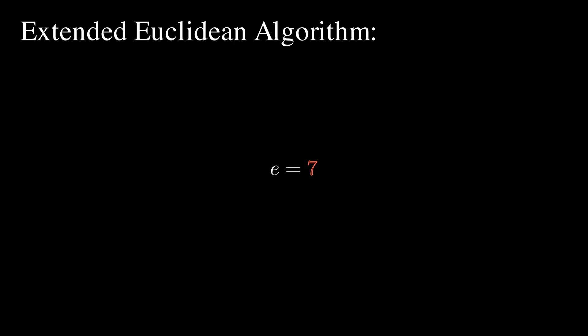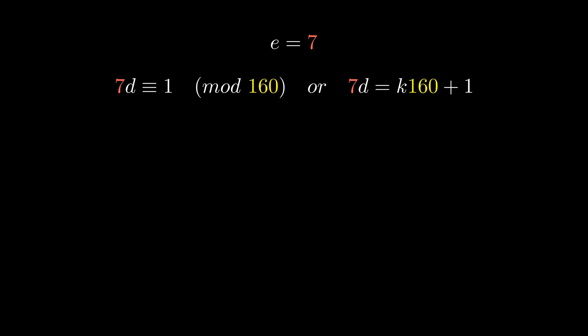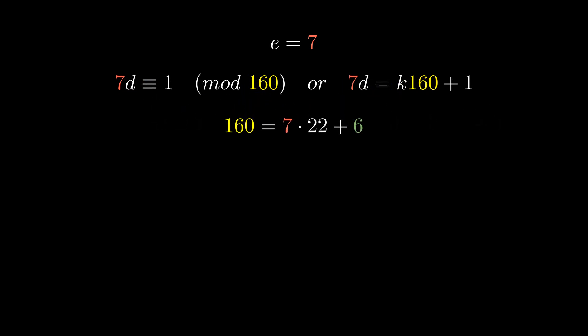We can choose e equals 7. And there we have it. E equals 7, D equals 23. And you can make E and N public and save D as your private key. And these numbers are what I used for the example at the beginning.